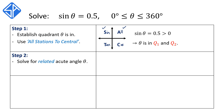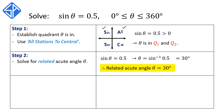The second step is now to solve for the related acute angle theta. Since sine theta is equal to 0.5 is positive, we can easily solve for theta using the calculator. Theta is equal to inverse sine of 0.5, and the calculator should return us 30 degrees. So our related acute angle theta is equal to 30 degrees.